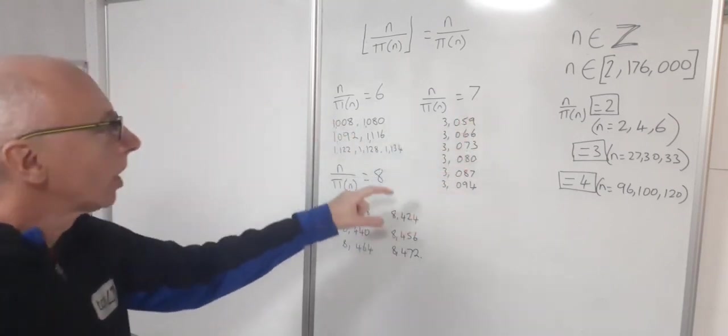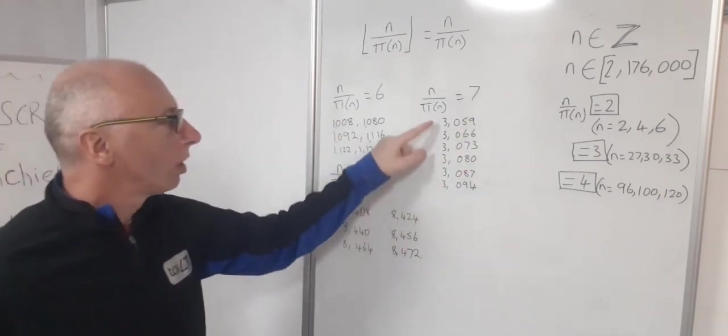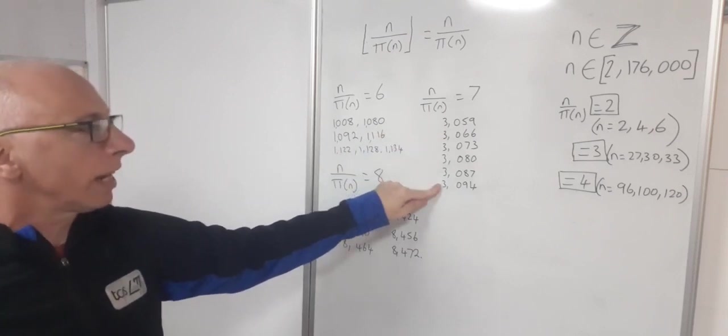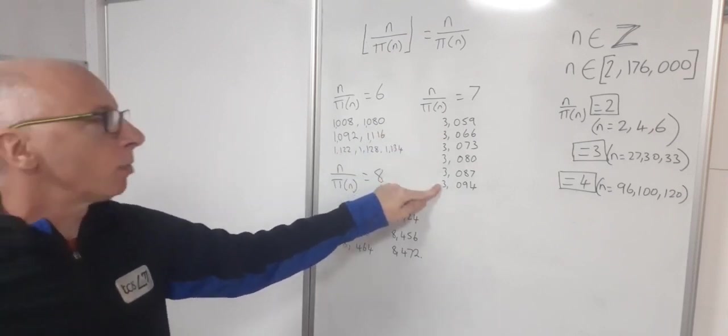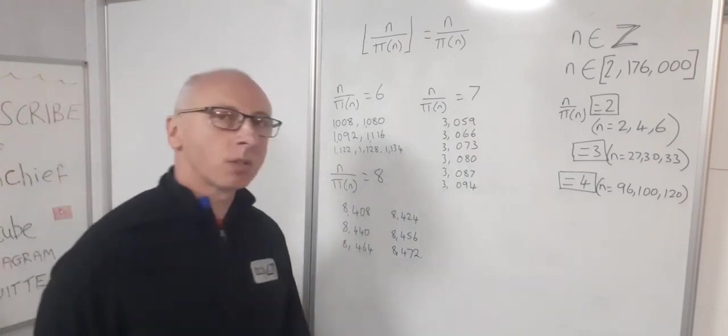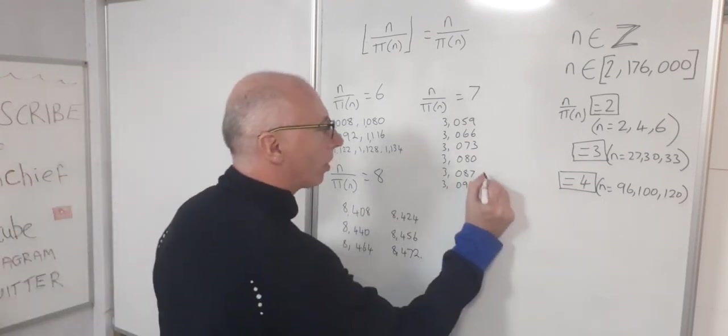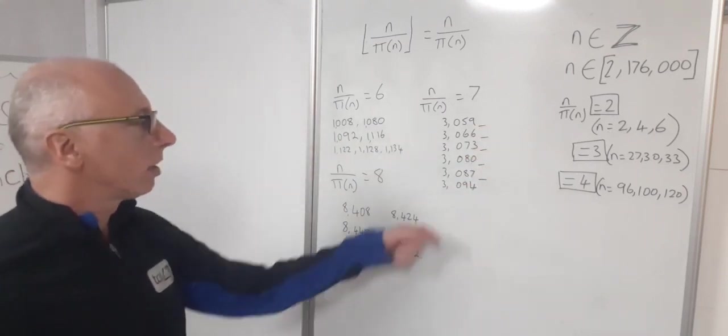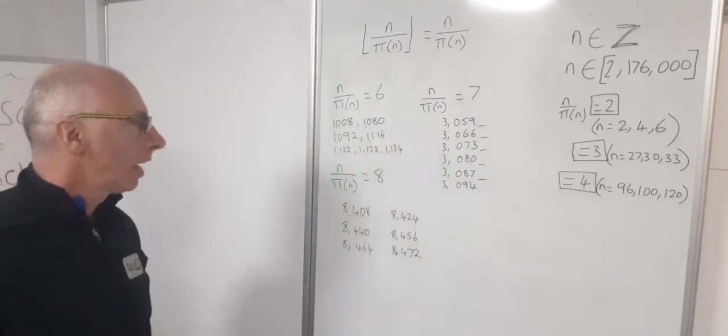we're jumping up even more. So we got to 3059 to 3094, of which there was 6. And they're all one after the other. So this is quite interesting here. That means there must be one prime number in between all of these integers here. And then for 8,